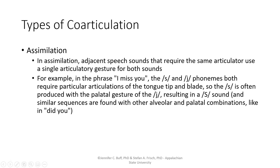We can describe different things that happen in co-articulation with a few different terms. One is assimilation. In assimilation, adjacent speech sounds that use the same articulator use a single combined articulatory gesture for both sounds. For example, in the phrase 'I miss you,' the S and the Y phonemes both require the use of the tongue tip and blade. As a result, the S sound is often produced with the palatal gesture of the Y, resulting in something that seems more like the palatal fricative SH.